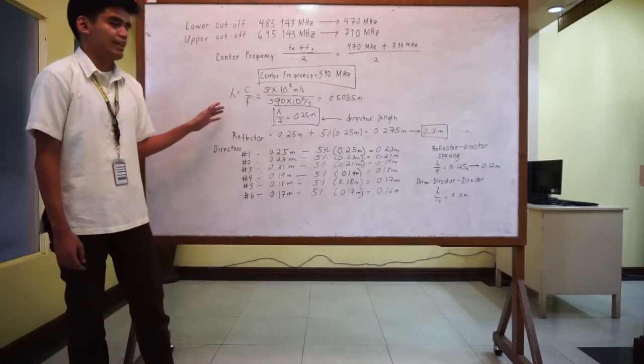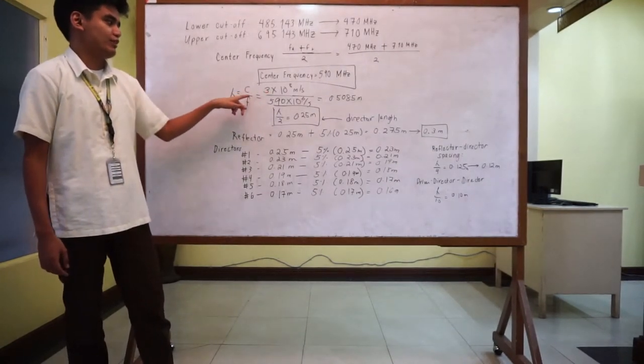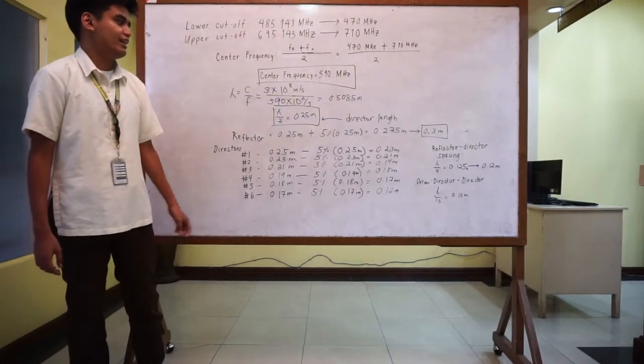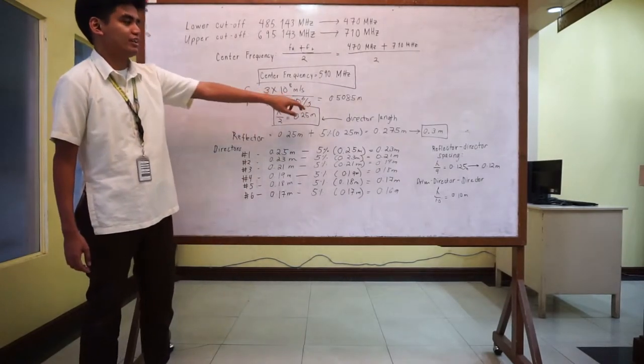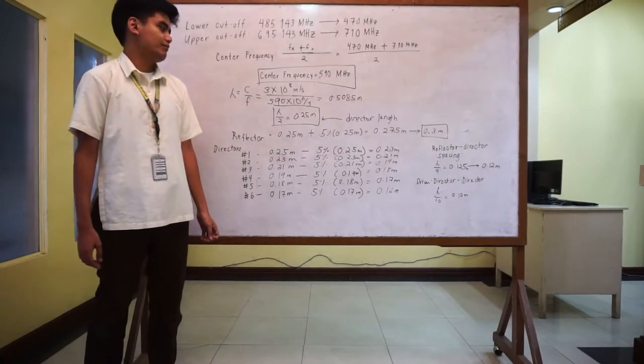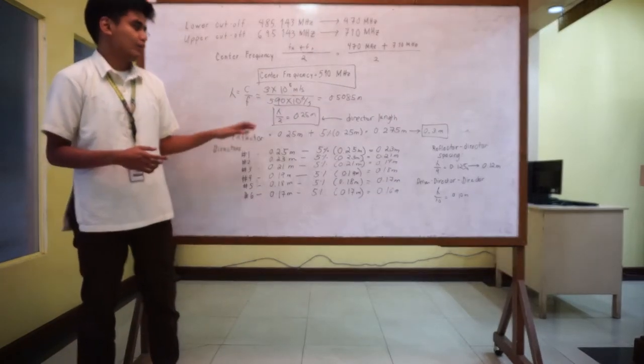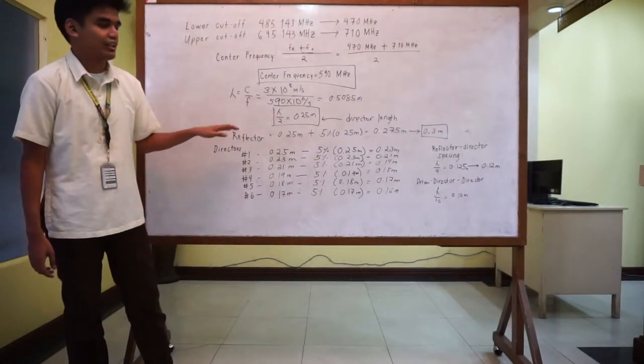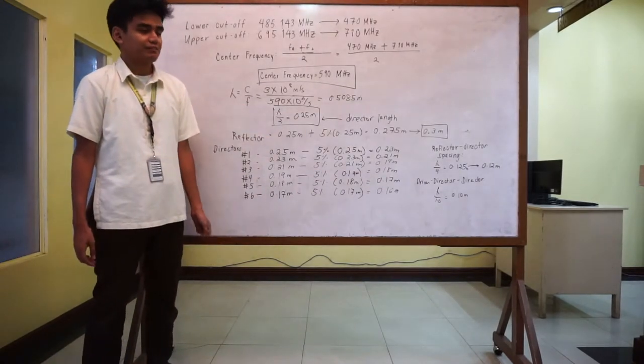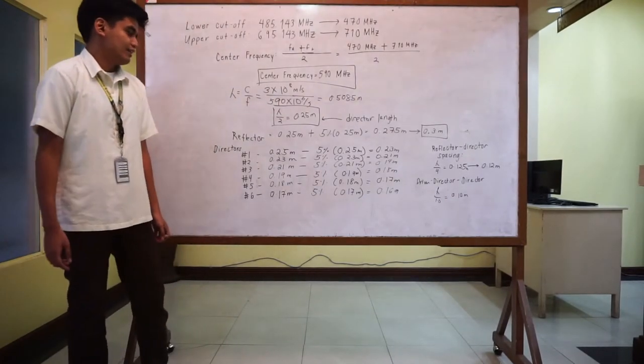So to compute for the wavelength of the area, we simply divide the speed of light with the frequency, the center frequency. So it will be 3 times 10 to the 8 meter per second divided by 590 times 10 to the 6 per second, which is equivalent to hertz. So the resulting wavelength will be 0.5085. So since we will be using a Yagi Uda aerial, the driven element will be half wavelength. So it will be resonant to the center frequency. So the half wavelength is equivalent to 0.25 meters. So this will be the length of the director that we will be using in our Yagi Uda aerial.